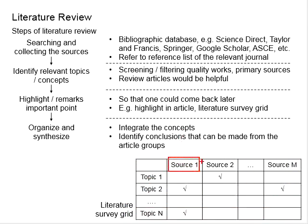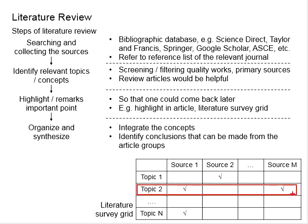Sometimes within a single source of publication there are several important points, and at the same time the same points can be found from different other sources. The grid is quite helpful for identifying relevant topics and relevant sources of publications. However, when you choose to use the grid, you might find that the more papers you review, the bigger the grid becomes, reaching a state that is difficult to manage. You will have to use your own judgment to find a solution that best suits your conditions.